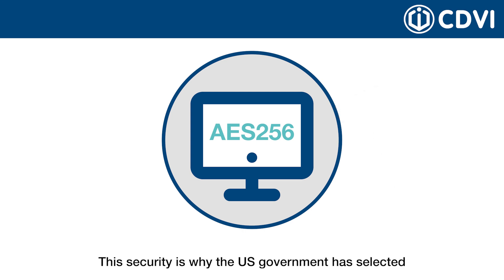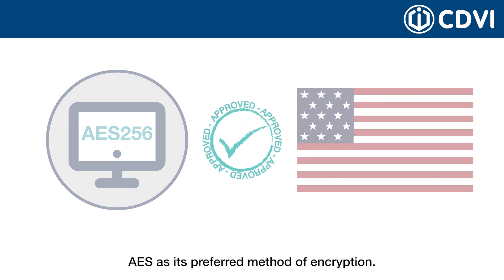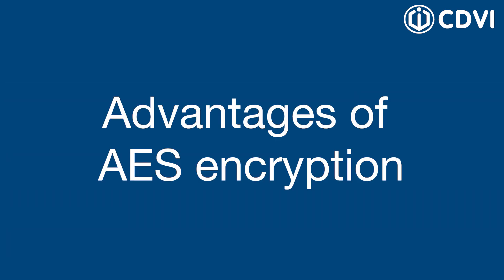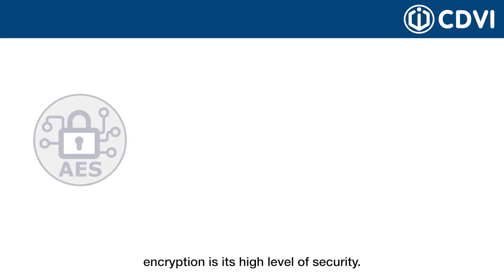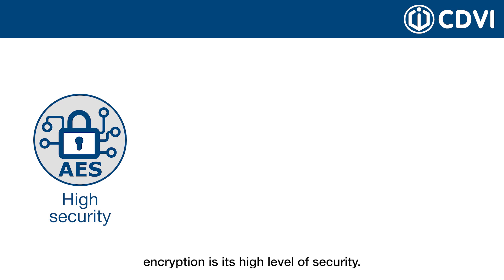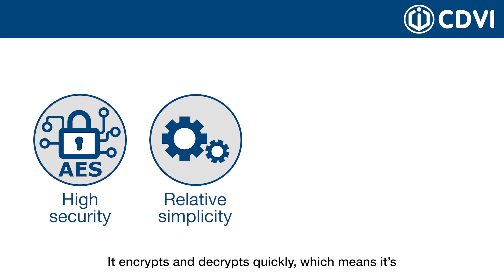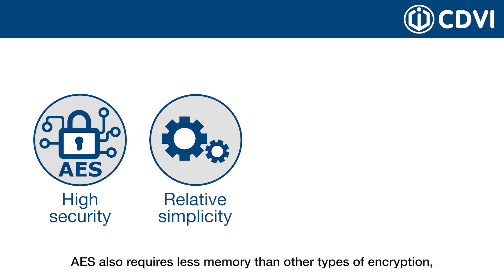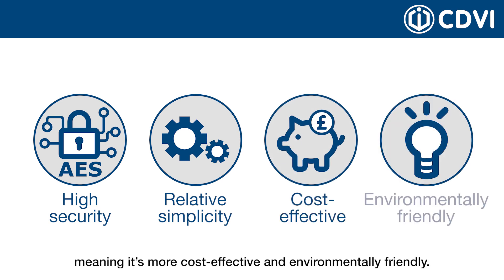This security is why the US government has selected AES as its preferred method of encryption. The main advantage of AES encryption is its high level of security. In addition, this method of encryption is relatively simple. It encrypts and decrypts quickly, which means it's a practical solution for real-life applications. AES also requires less memory than other types of encryption, meaning it's more cost-effective and environmentally friendly.